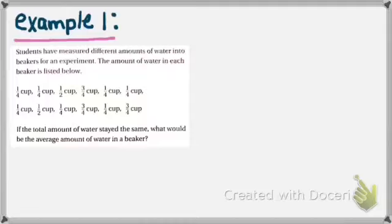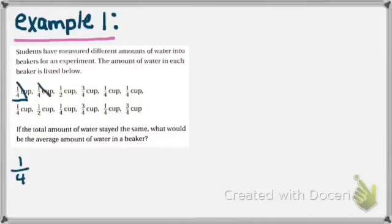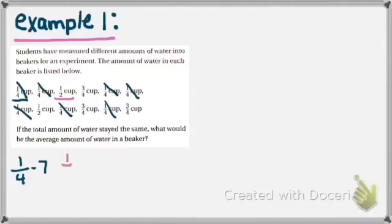First thing I need to do when making a line plot is see what data I have. My first data is one-fourth cup. I want to find how many other one-fourth cups I have, so I'll write one-fourth and count: one, two, three, four, five, six, seven. I have seven one-fourth cups. Now I'll find the next bit of data not yet crossed out — I see one-half. Let's count how many one-halves I have: one, two. So I have two one-half cups.